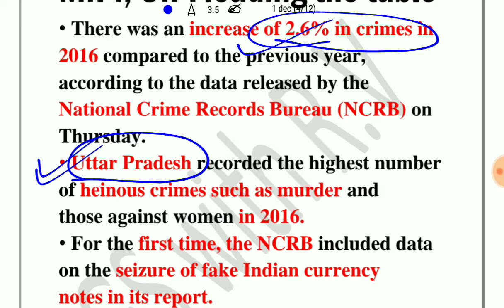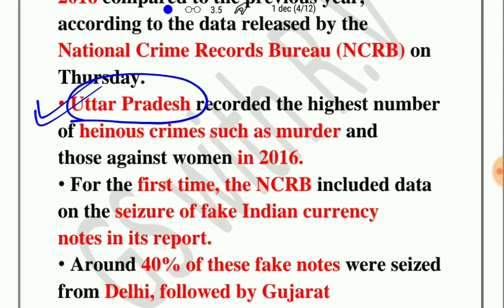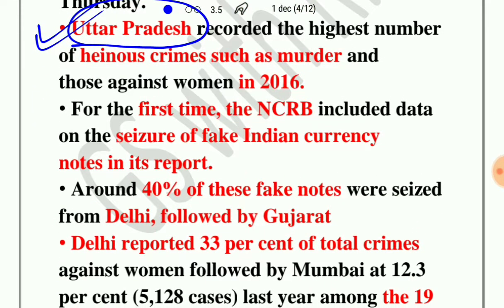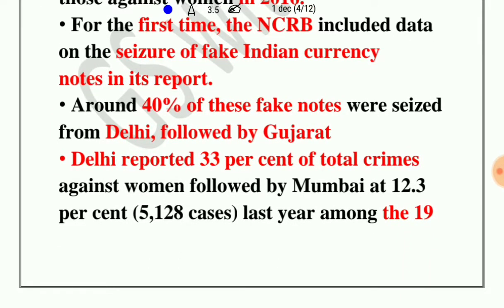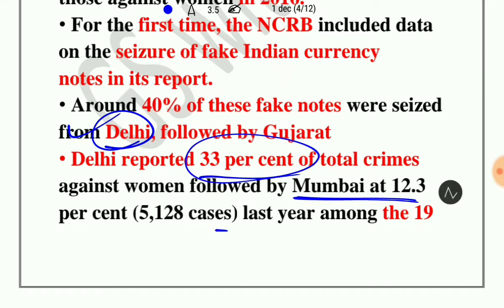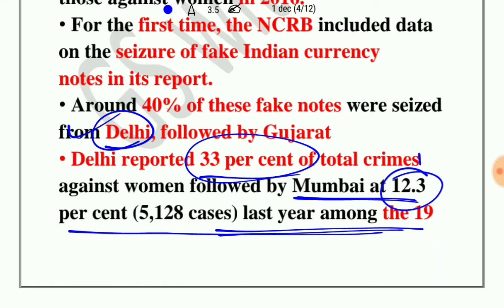It is very important to note that for the very first time, NCRB has included data on the seizure of fake Indian currency. Around 40% of the fake notes were seized from Delhi, followed by Gujarat. Delhi also reported 33% of the total crimes against women, followed by another state at 12.3%, making Delhi the most crime-affected city against women in the country.